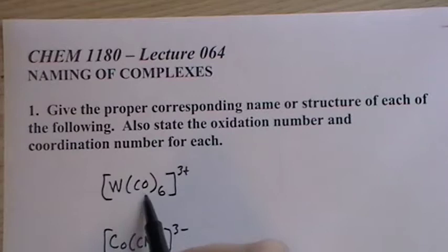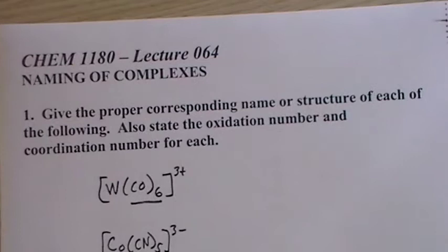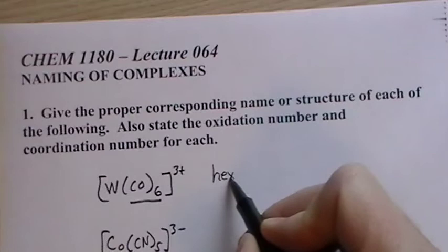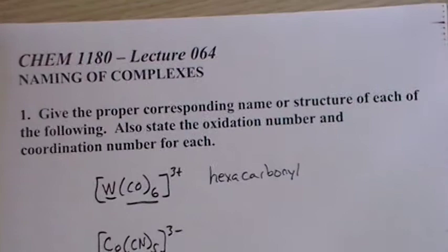But here it's the ion, and what we do when we have the formula is we name the ligands first with a prefix, and if there's more than one ligand we put them in alphabetical order. But here there's only one, it's carbonyl, so we call it hexacarbonyl.